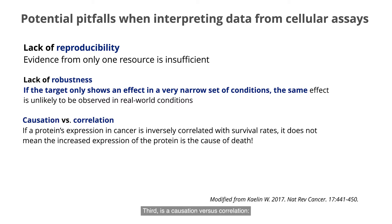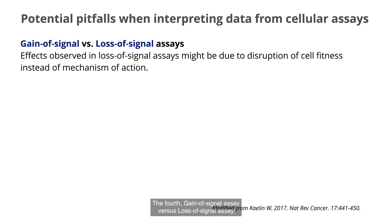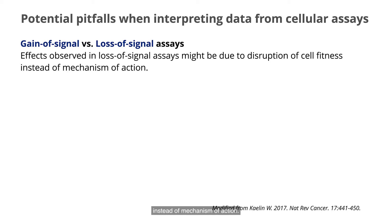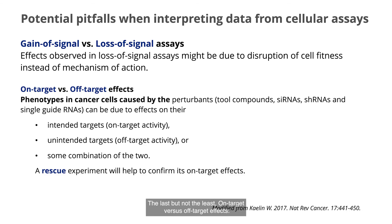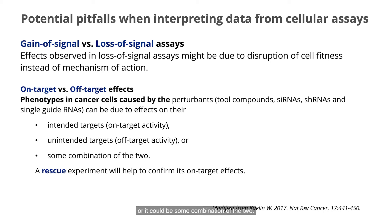Third, causation versus correlation — for example, a protein whose expression in cancer inversely correlates with survival rate does not mean that protein is the cause of death, and thus should not be claimed as a valid target on this evidence alone. Fourth, gain-of-signal assay versus loss-of-signal assay — effects observed in a loss-of-signal assay might be due to disruption of cell fitness instead of mechanism of action. Finally, on-target versus off-target effects: reagents such as siRNAs, shRNAs, and single-guide RNAs can cause phenotypes due to on-target activity, off-target activity, or a combination of both. A rescue experiment will help to confirm on-target effects.